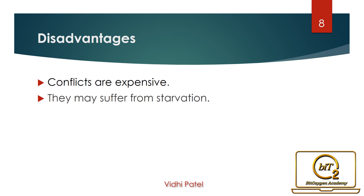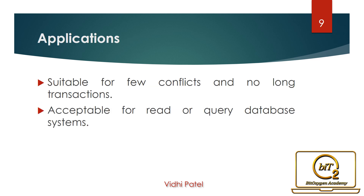With advantages, there are some problems of the optimistic method. Conflicts are expensive to deal with since the conflicting transaction must be rolled back. Longer transactions are more likely to have conflicts and may be repeatedly rolled back because of conflicts with shorter transactions, so they may suffer from starvation. It is only suitable for environments where there are few conflicts and no long transactions. It is acceptable for mostly read and query database systems that require very few update transactions.